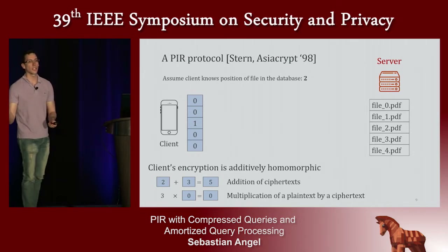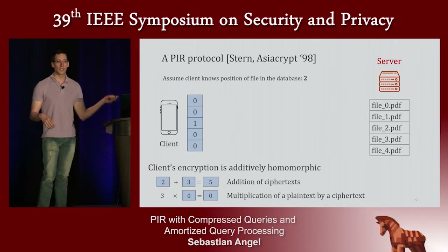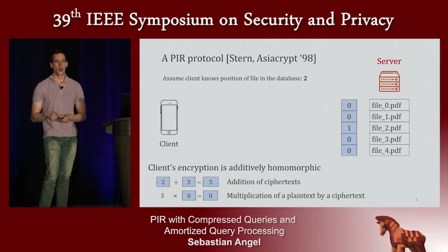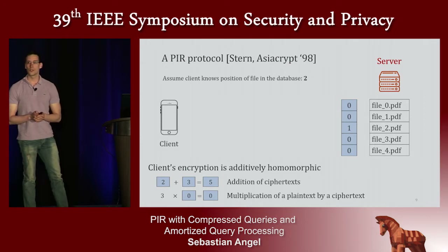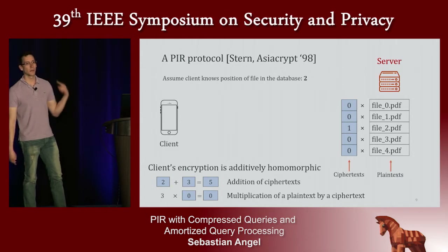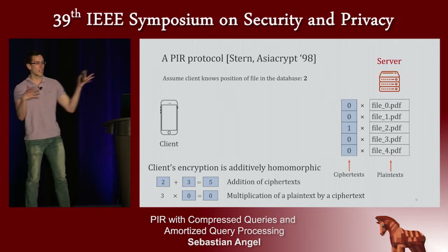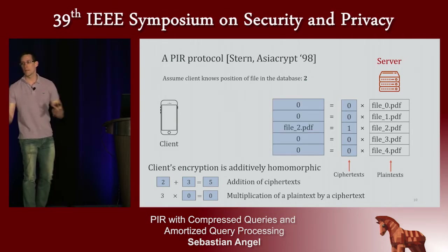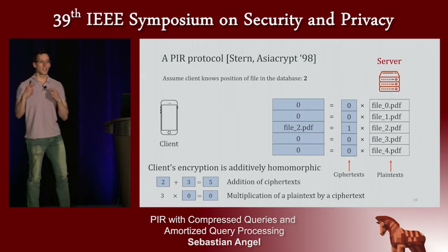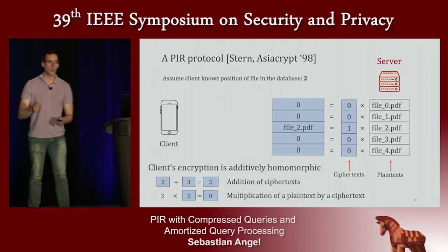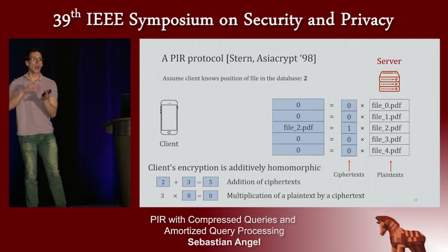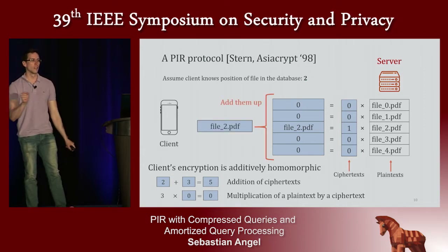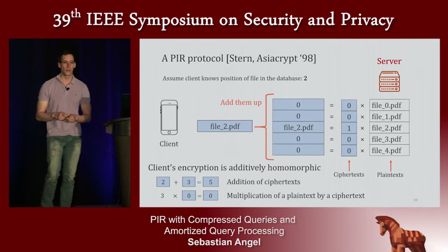Being additively homomorphic means the server, without having the secret key, can take two ciphertexts and add them to get back the sum of the corresponding plaintexts, and can also multiply a ciphertext by a plaintext. The client sends this query vector over the network to the server, and the server computes a dot product — entry-wise multiplications between ciphertexts and plaintexts (files as giant integers). Multiplying by zero gives zero, multiplying by one gives the original value. The server then adds all ciphertexts into a single ciphertext encrypting the file and sends it back to the client.